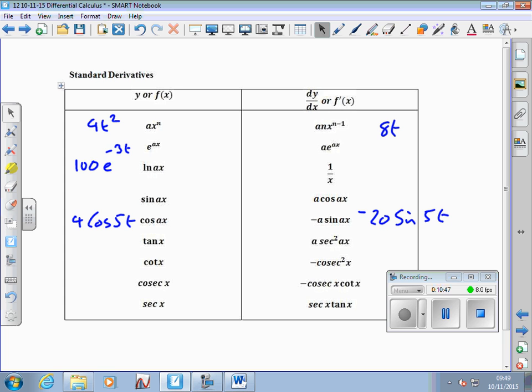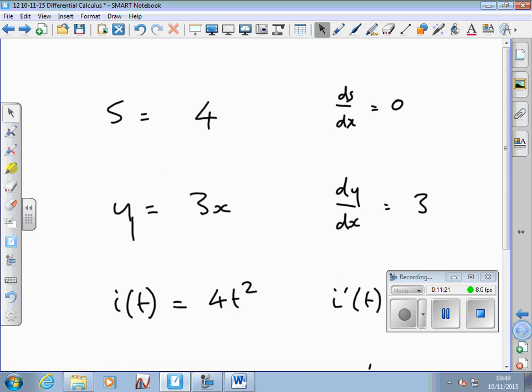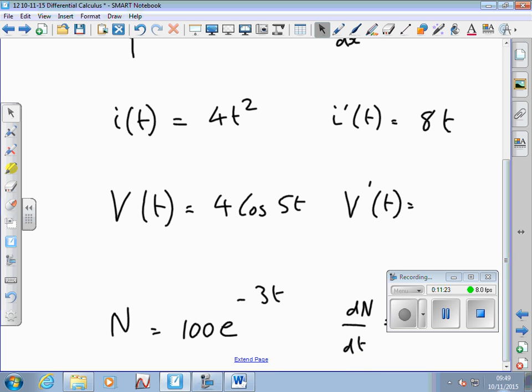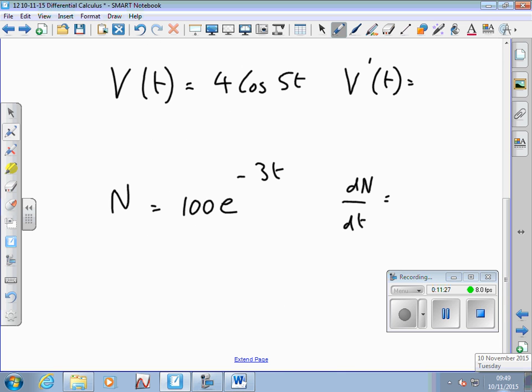If we look at the function, the a, what happens? The a inside, the constant, comes down and goes in front and the rest stays exactly the same. Look, e to the ax stays as e to the ax. The constant comes down and goes in front. And so, minus 3 comes down and multiplies by the 100. So we have minus 3 times 100, e to the minus 3t. So, dN/dt equals minus 300 e to the minus 3t.